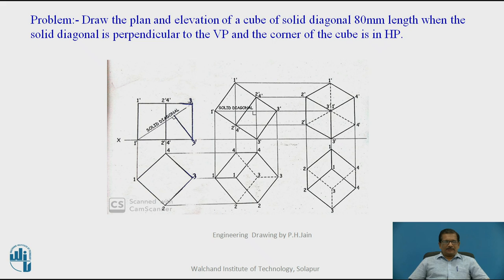This is the given problem: Draw the plan and elevation of a cube of solid diagonal 80 mm length, when the solid diagonal is perpendicular to the VP and the corner of the cube is in HP.